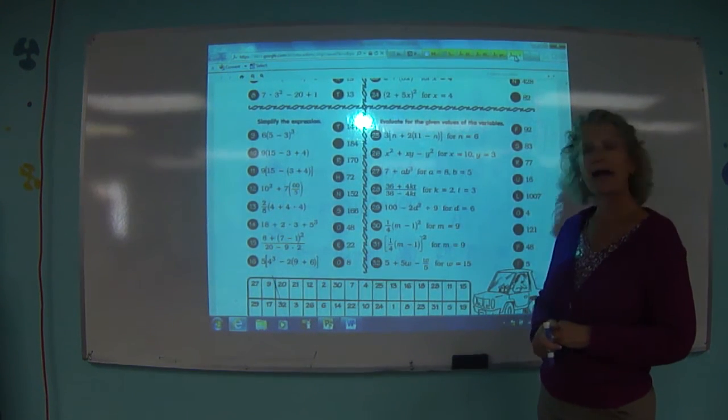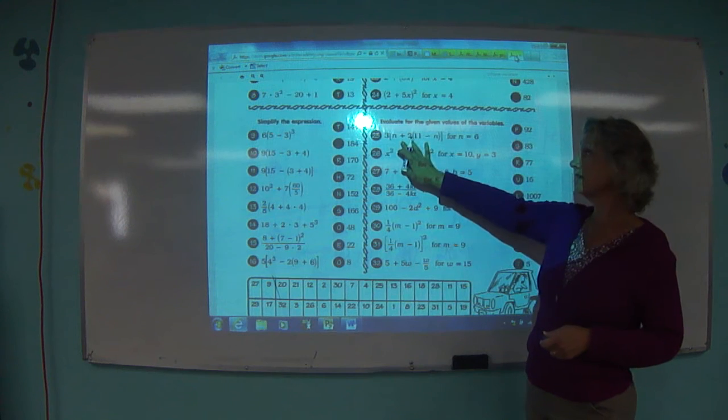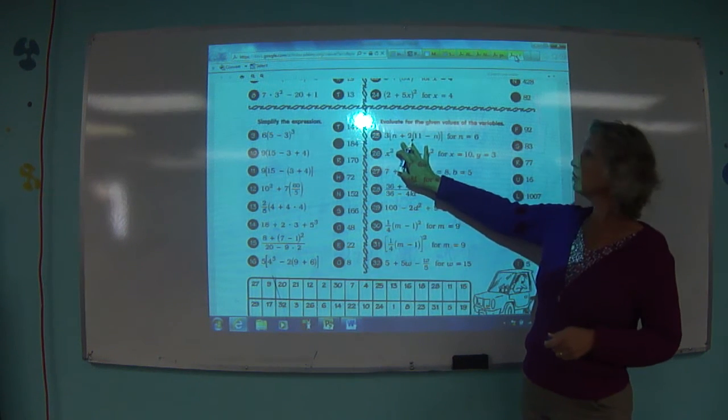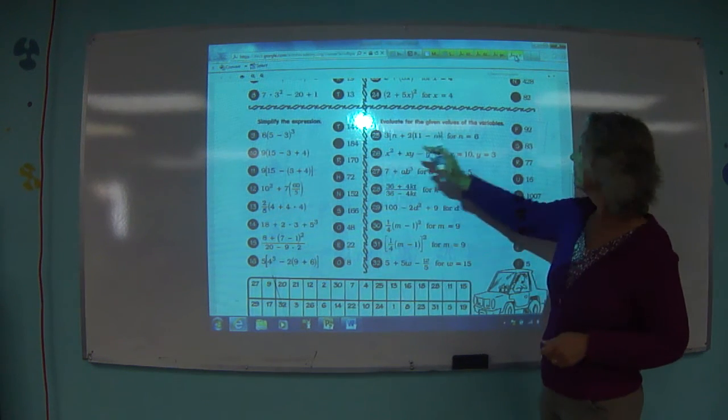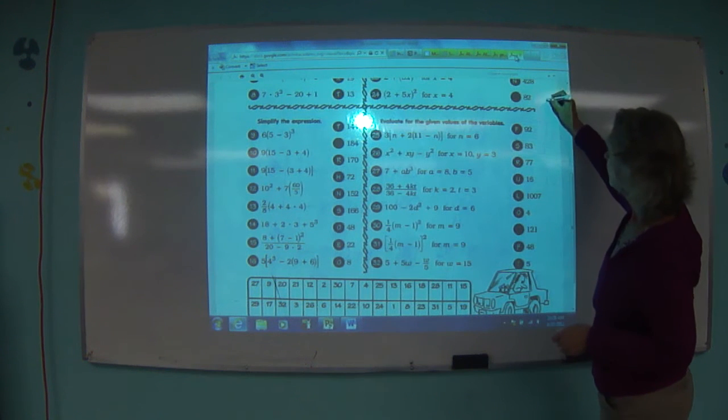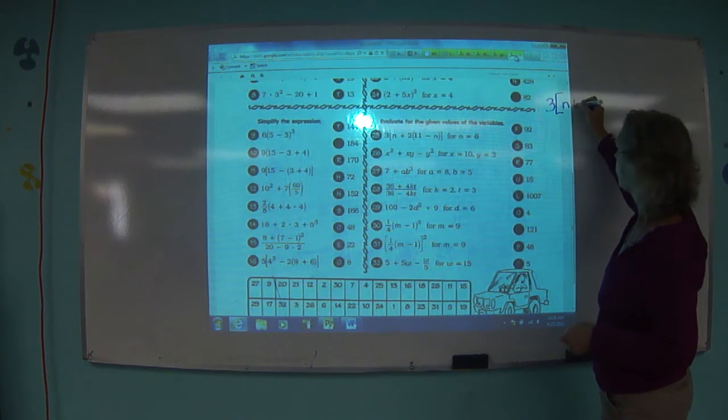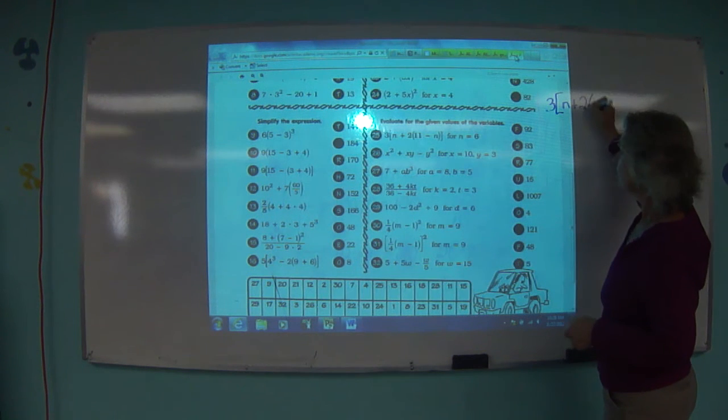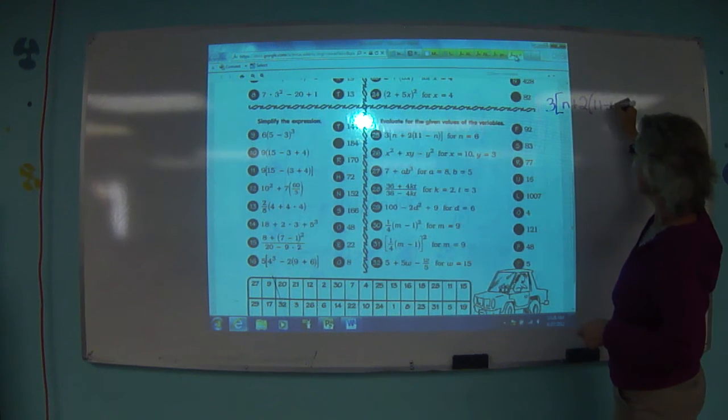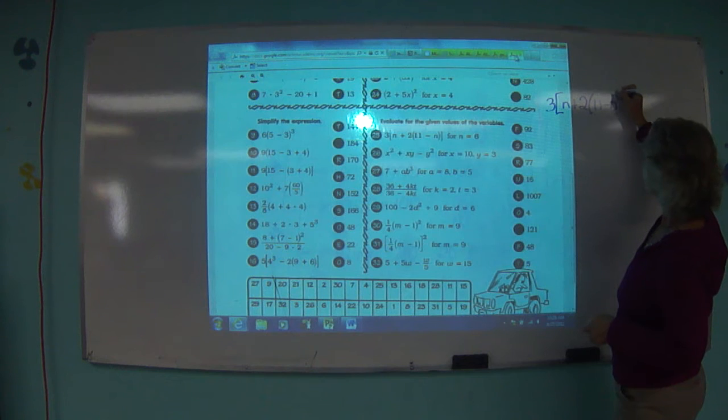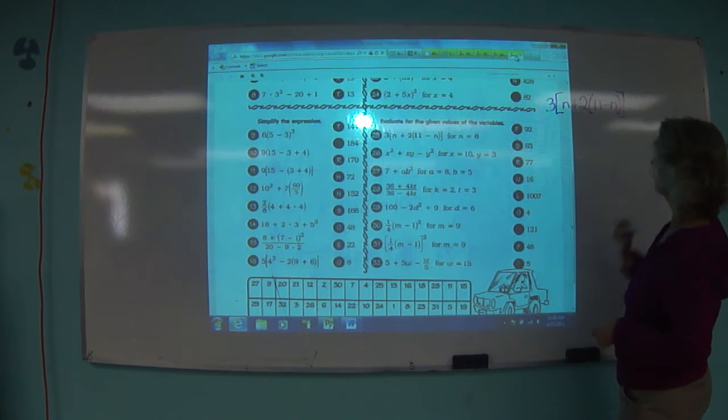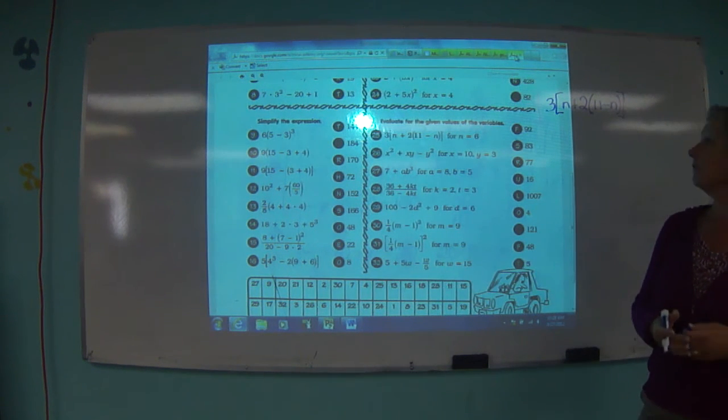So you have to simplify your expression. For instance, in the case of 25 here, so you have 3 times the quantity of n plus 2 times 11 minus n. Close the parentheses, close the bracket. You're going to have to solve this expression.